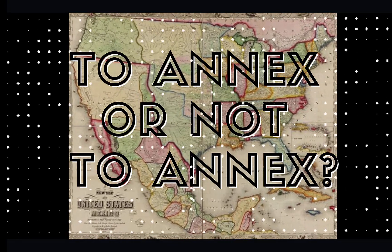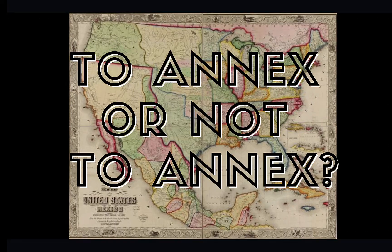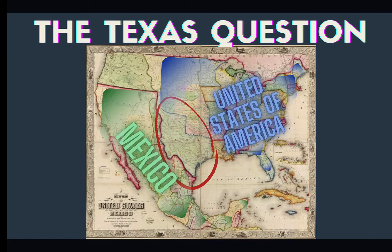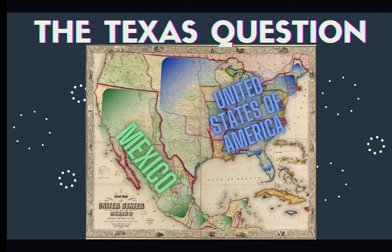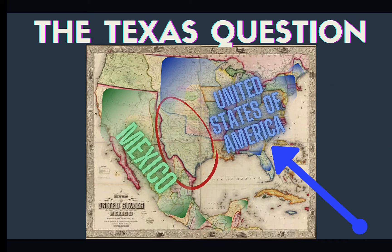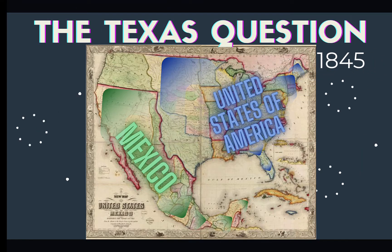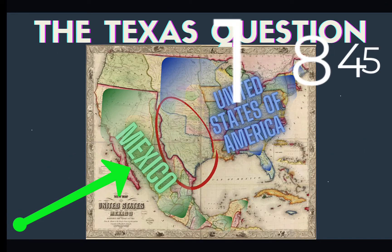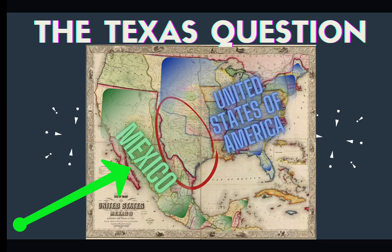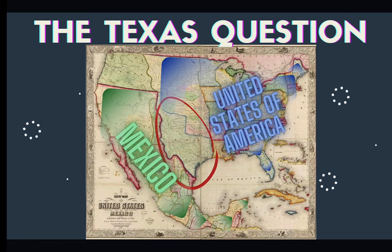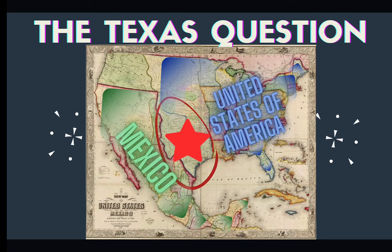To annex or not to annex — this is our official question, which we can refer to as the Texas question. Looking at this map, everything in blue is property of the United States of America in 1845, and everything in green is owned by Mexico. Right smack in the middle is the Republic of Texas. Remember, Texas was once part of Mexico — they had their own revolution and declared independence in 1836.